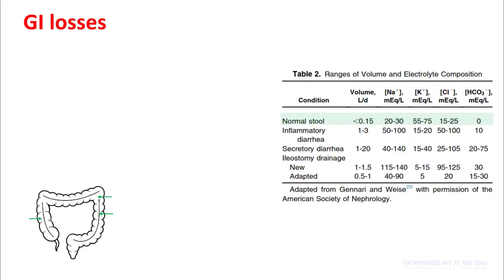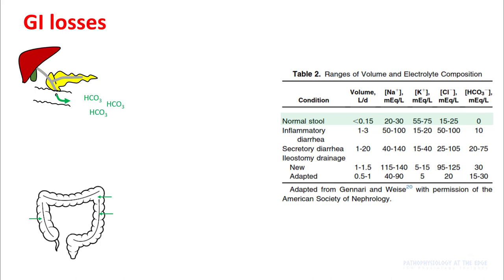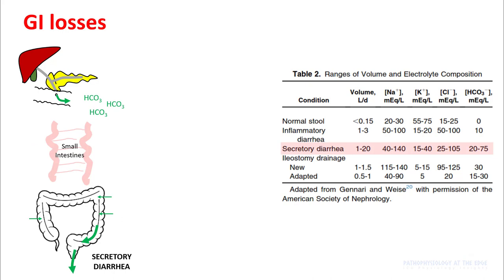GI losses can happen from the colon, though secretion of bicarb in the colon is pretty limited in normal situations. The majority of bicarb actually comes from the hepatobiliary system and pancreas, and the role of this bicarb is to neutralize acid and make food more alkaline for enzymes to act on. Most of this bicarb is absorbed in the small intestines. However, if there is secretory diarrhea, there is increased motility in the small intestine and most of the bicarb is lost in the stool — and you can see that the amount of bicarb in secretory diarrhea is much higher.